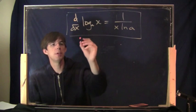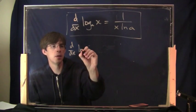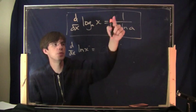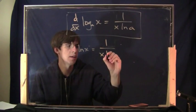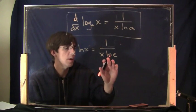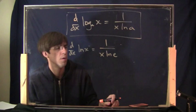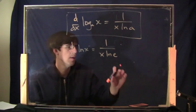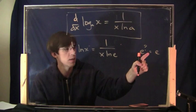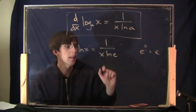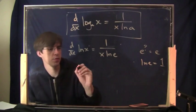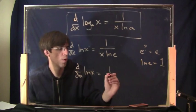What if it was the natural log to begin with? Then it would say the natural log of x. Remember, ln of x is the same as this but where a equals e. So I use this formula but with e instead of a. The answer is 1 over x times ln of e. What is the natural log of e? This says ln of e means: what is the exponent such that e to what power equals e? The answer is 1. So ln of e equals 1, and the formula simplifies to: derivative of ln of x equals 1 over x.